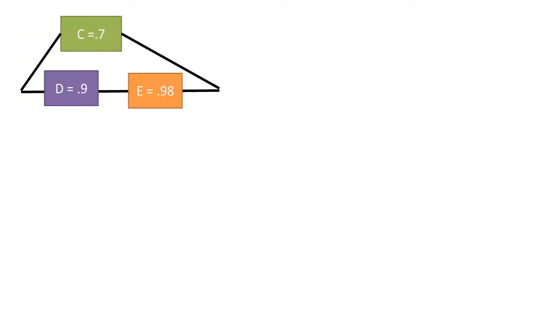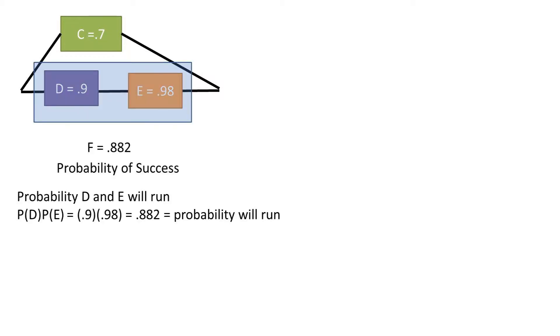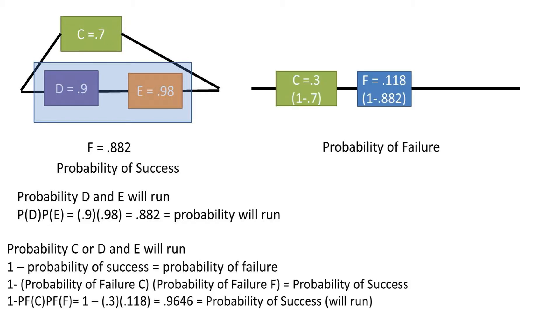So now let's say the process is in parallel with one branch with two values in series. We would first find the probability of the branch with two values in series. Then we would set it equal to the new sub-probability value. Then we would treat the values as if they were all in parallel.